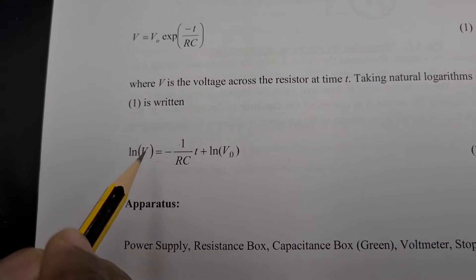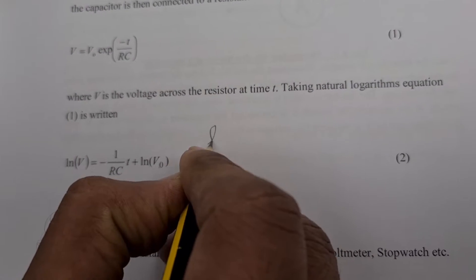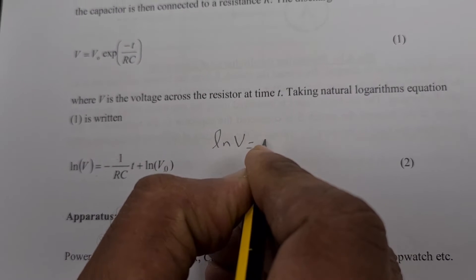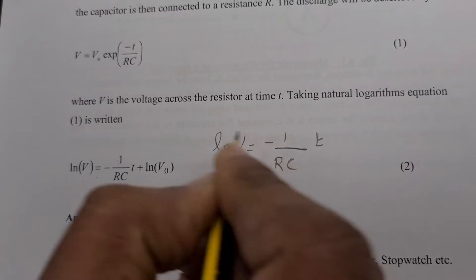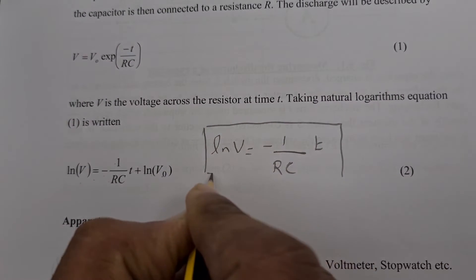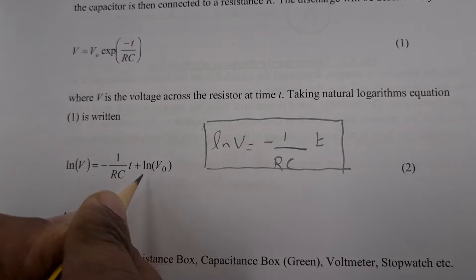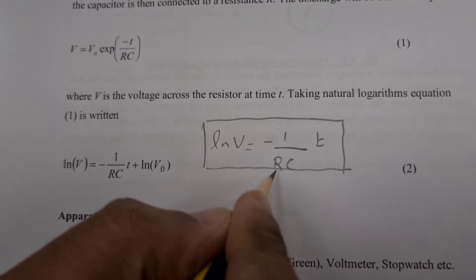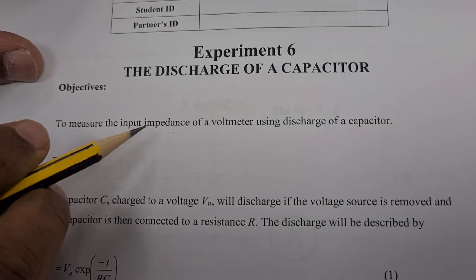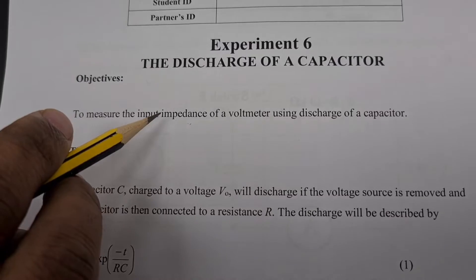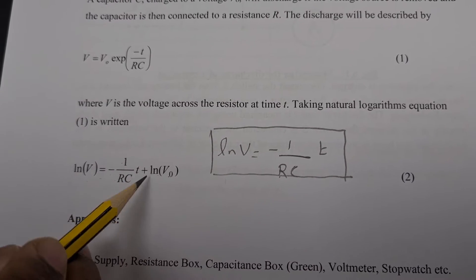Generally, this equation will not be given in this form. We will give the equation in this format: natural log of V equals minus 1 over RC multiplied by T. This is the equation that will be given in your exam paper. I am not mentioning the Y-intercept here because we do not bother about the intercept value — we only need to find the resistance value, because that is our objective: input impedance.